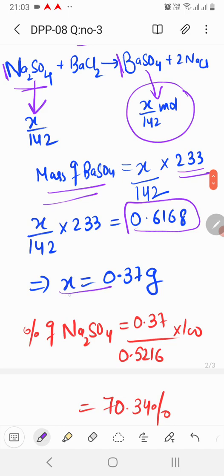you get the value of x and once x is known, you can calculate the percentage which is 70.34. Hope it helps.